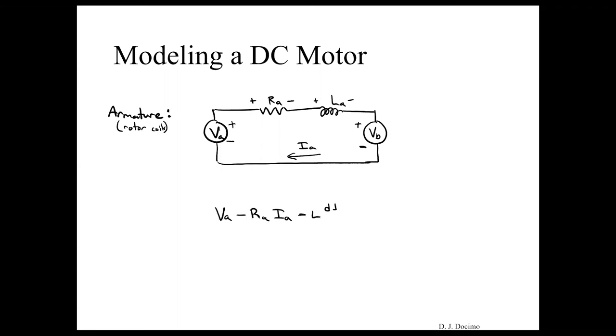So if we apply the voltage law here, we'll have VA minus RA times IA minus LA times dIA over dt minus VB. This IA here, that's our state because our inductor needs a current state here. And then this VA, that's our source voltage, that's our input that we're using to power this DC motor.